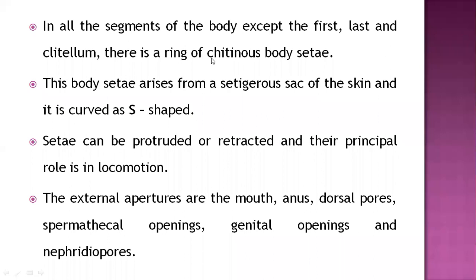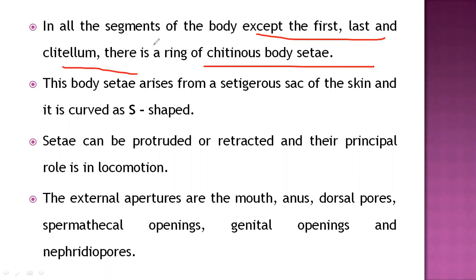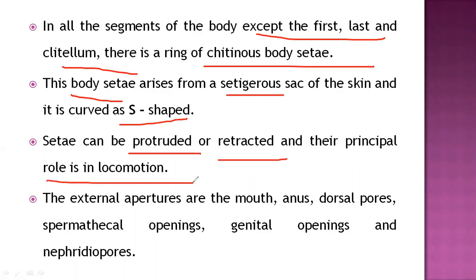In all segments of the body except the first, last, and clitellar segments, there is a ring of chitinous setae. The setae are S-shaped and arise from a sac in the skin. Like using a comb for the hair, the setae are used for gripping purposes. The setae can be protruded or retracted, and their principal role is in locomotion.